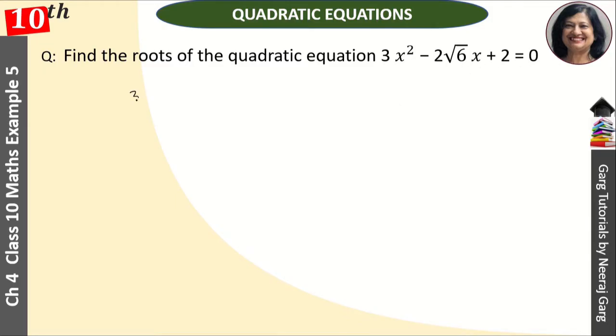We have the equation given as 3x square minus 2 root 6x plus 2 that is equal to 0. Splitting the middle term, 3 into 2, multiply them, 6 is equal to 2, that is equal to 6. Think about this question.